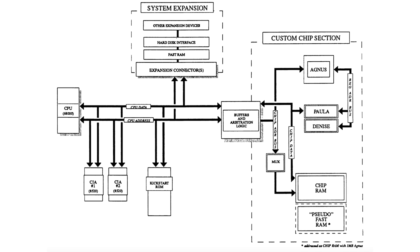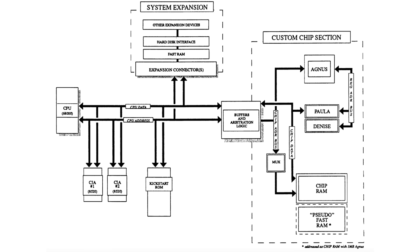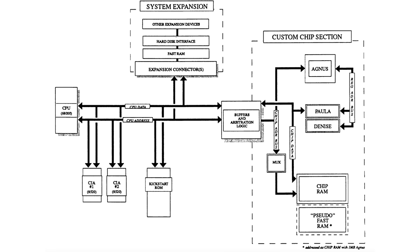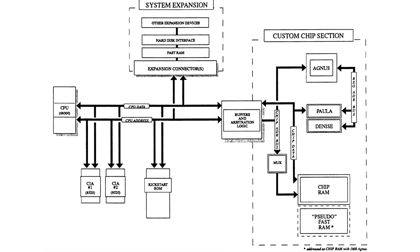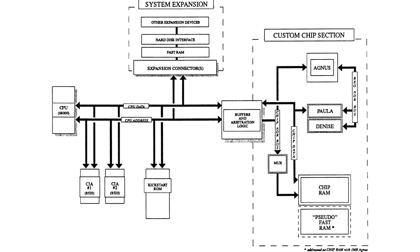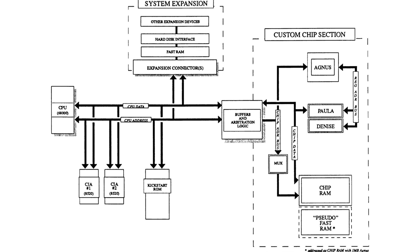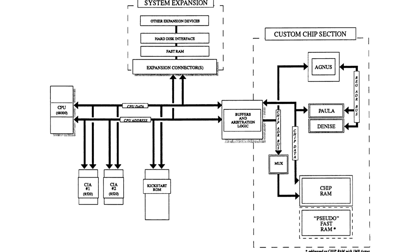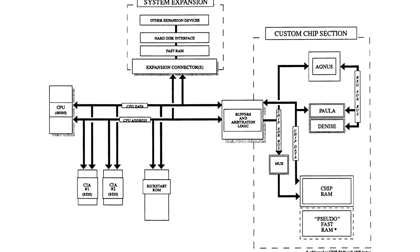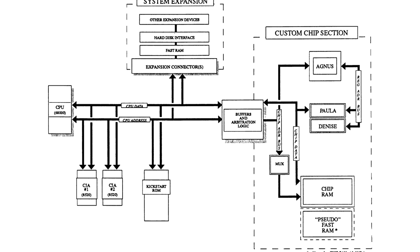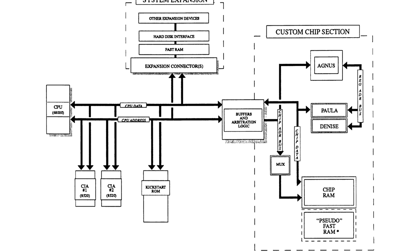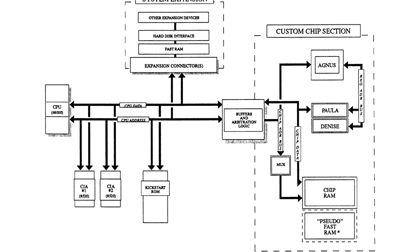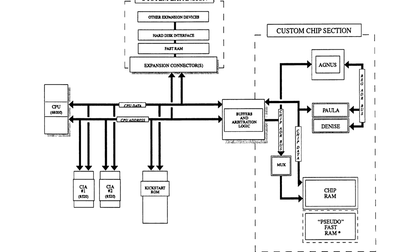One of the downsides of using this technique is that whenever the Copper is used, it steals processor cycles from the other chips, which means you have less time to do other essential things in the game. As with most things, it's a balance — this is why I didn't make the mountain range any bigger.